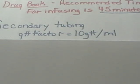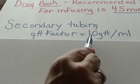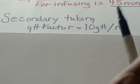We get our secondary tubing and we look for our drop factor. Our drop factor in this case equals 10 drops per milliliter.